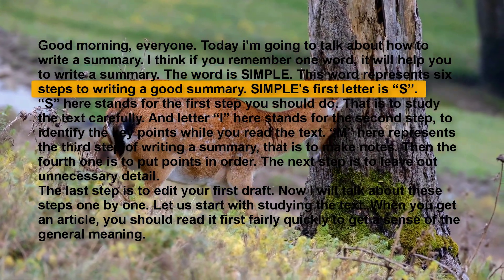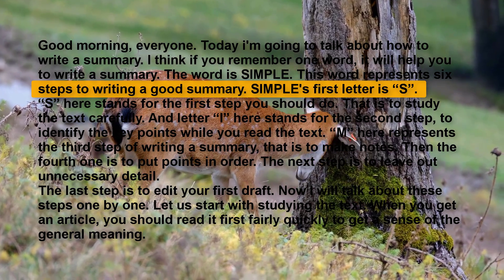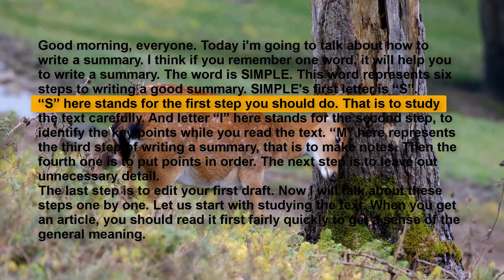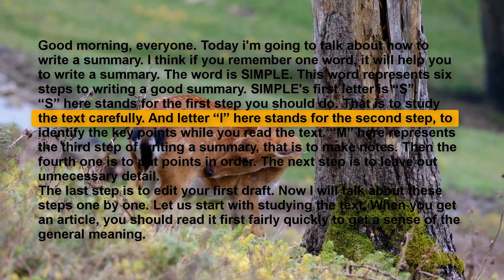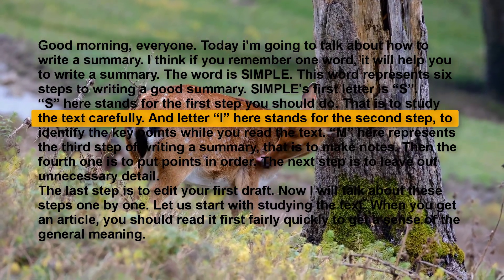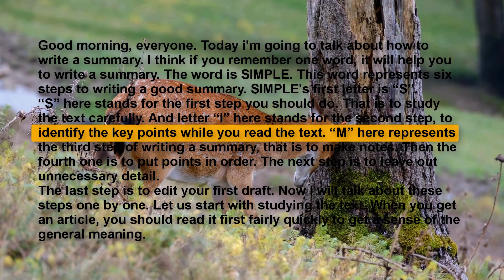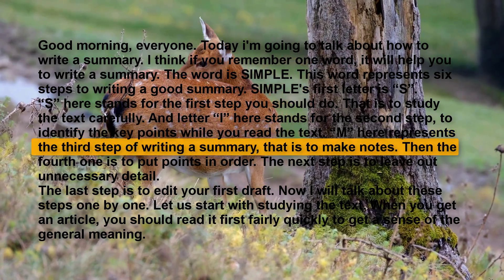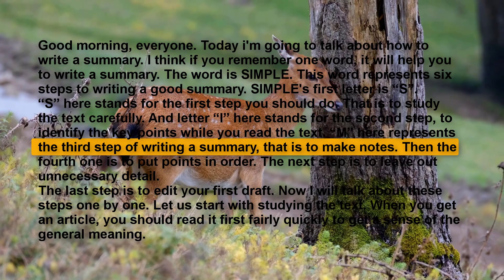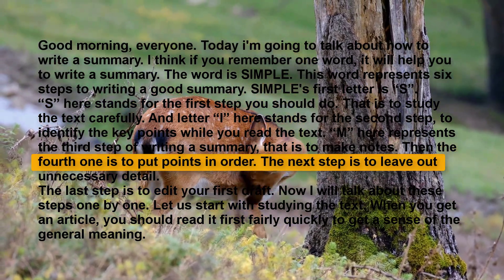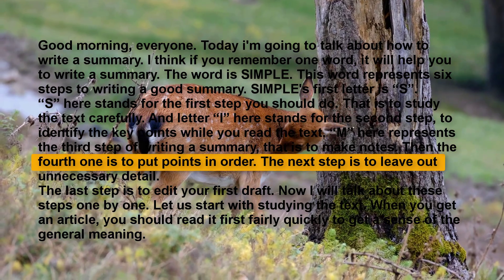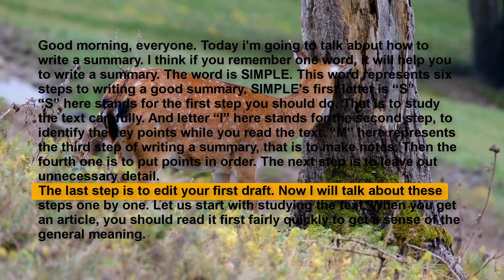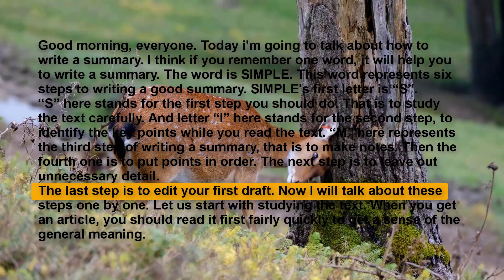This word represents six steps to writing a good summary. SIMPLE's first letter is S — S stands for the first step: to study the text carefully. I stands for the second step: to identify the key points while you read the text. M represents the third step: to make notes. Then the fourth one is to put points in order. The next step is to leave out unnecessary detail. The last step is to edit your first draft.